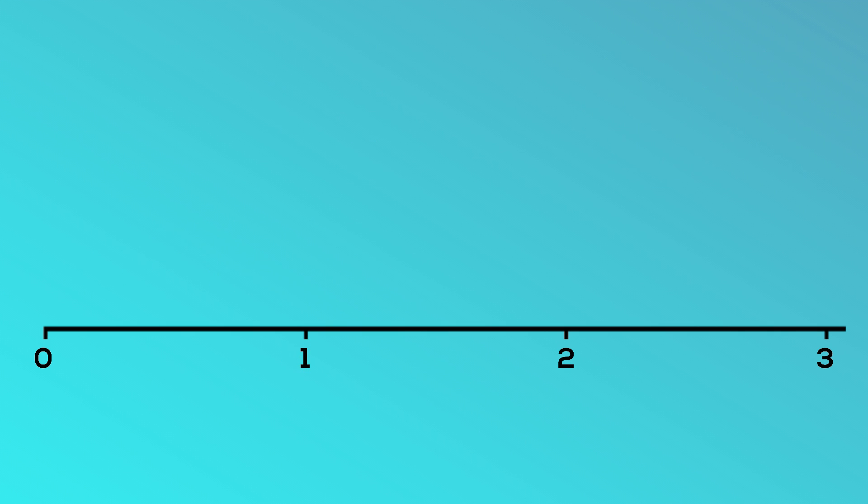Let's look at another mixed number, two and two thirds, and see if we can find it on the same number line. This mixed number has two wholes. Here is two wholes on the number line. Now we need to find two thirds. Because our fraction is in thirds, we will need to divide the next whole into three equal parts. Here is two wholes and one third, and here is two wholes and two thirds.